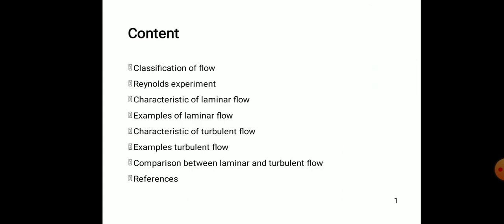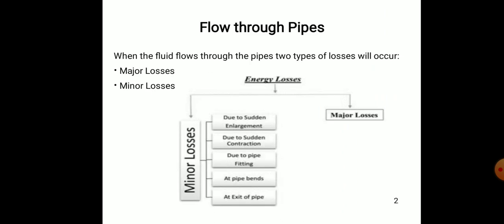These are all the contents which are going to be covered in today's lecture. Before starting with the concept of laminar and turbulent flow in pipe, one must remember or be aware about what is flow through pipe and what are the various types of losses which occur in the pipe. When fluid flows through pipes, there are two types of losses: major and minor.